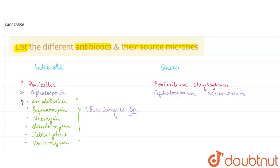We matched these antibiotics to Streptomyces species. Some more antibiotics come from Micromonospora — that is Gentamicin, which comes from Micromonospora purpurea.